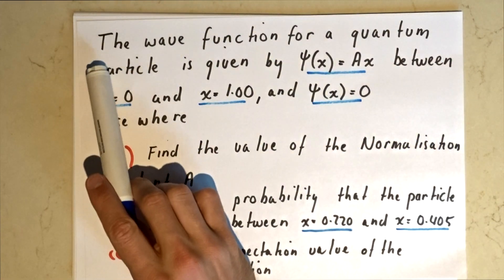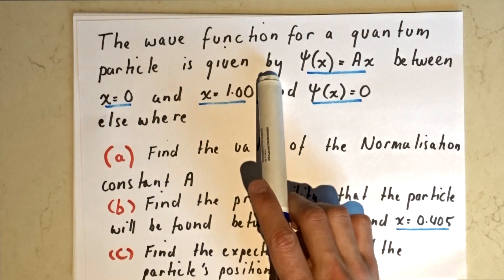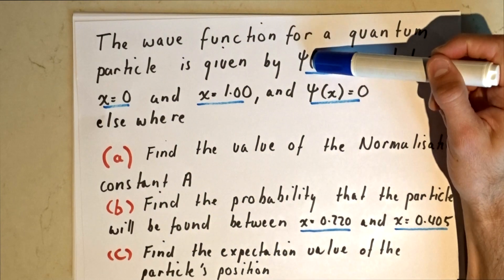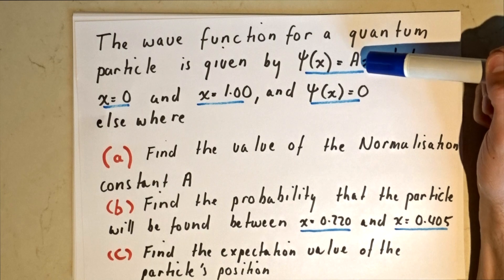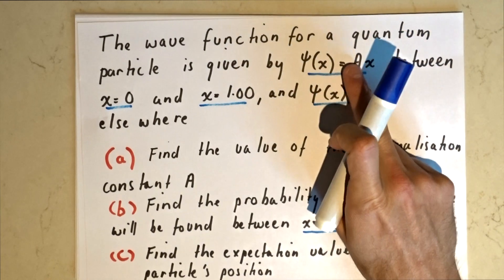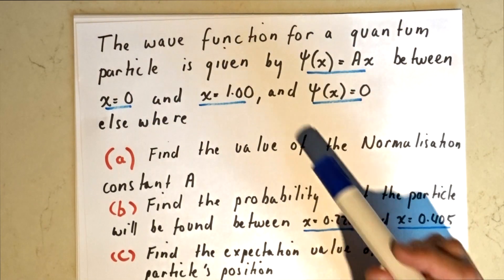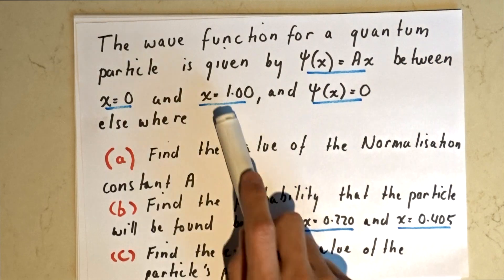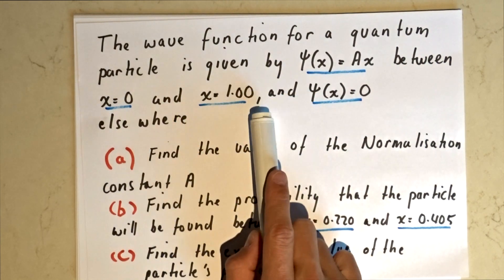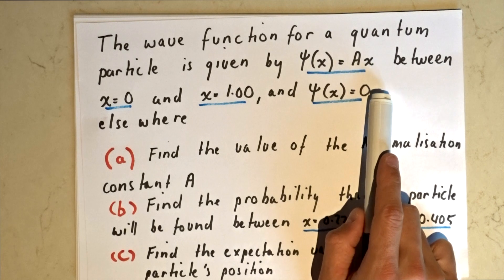Basically, the wave function for a quantum particle is given by psi(x) = ax. That's our wave function equation, between x equals 0 and x equals 1, and elsewhere the wave function equals zero.